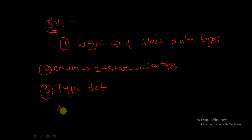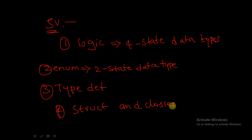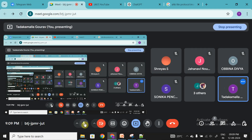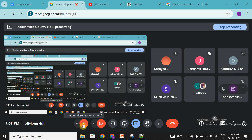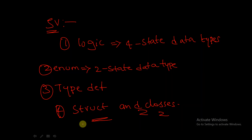We also have structures and classes. These are the data types in SystemVerilog — logic, enum, typedef, structures, and classes. Logic is a four-state data type and enum is a two-state data type. So what is a two-state data type?